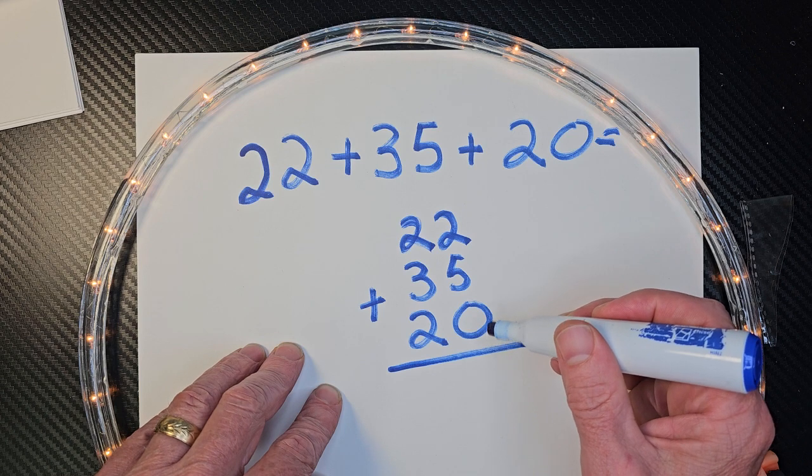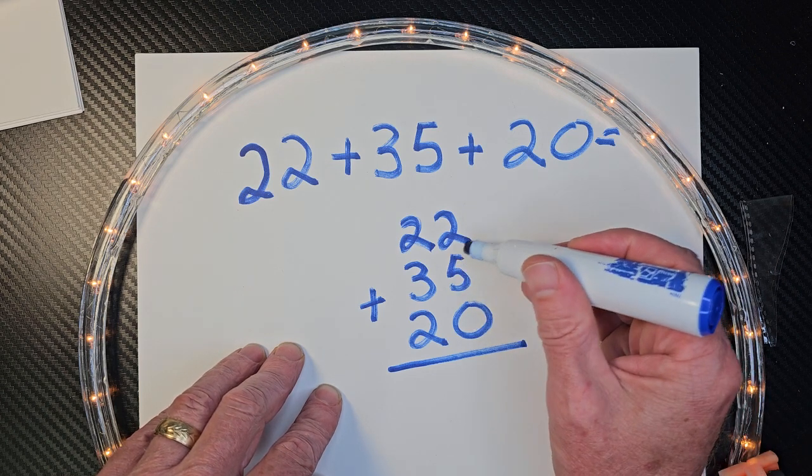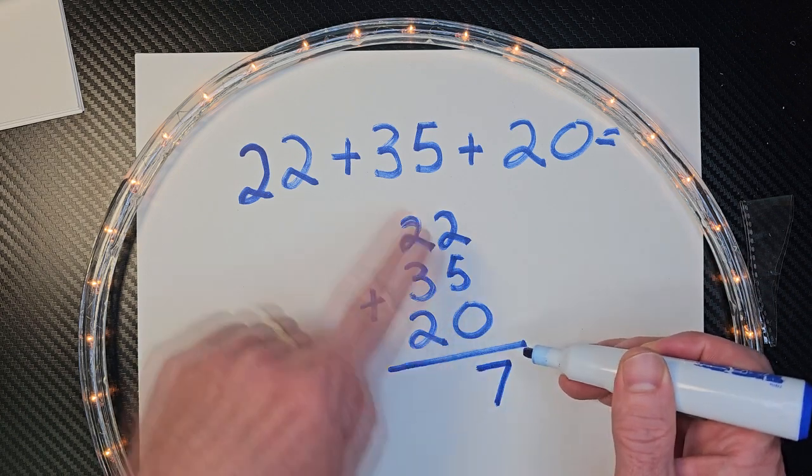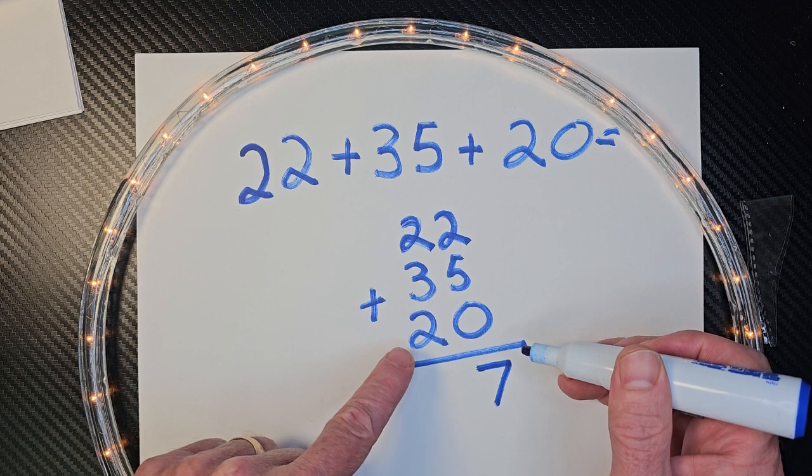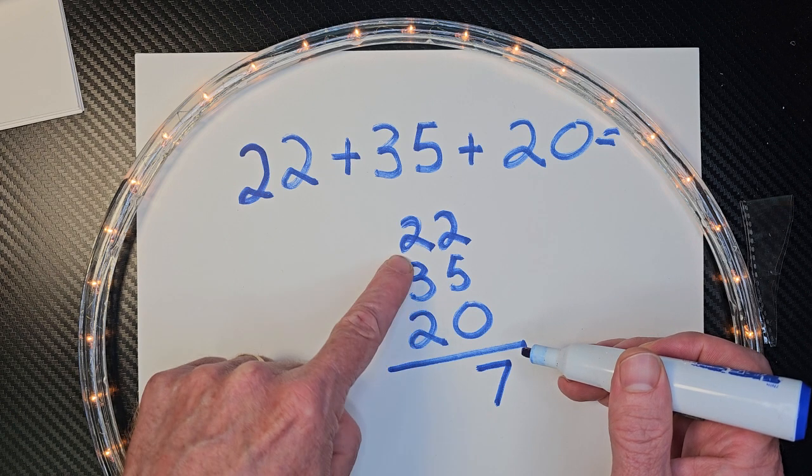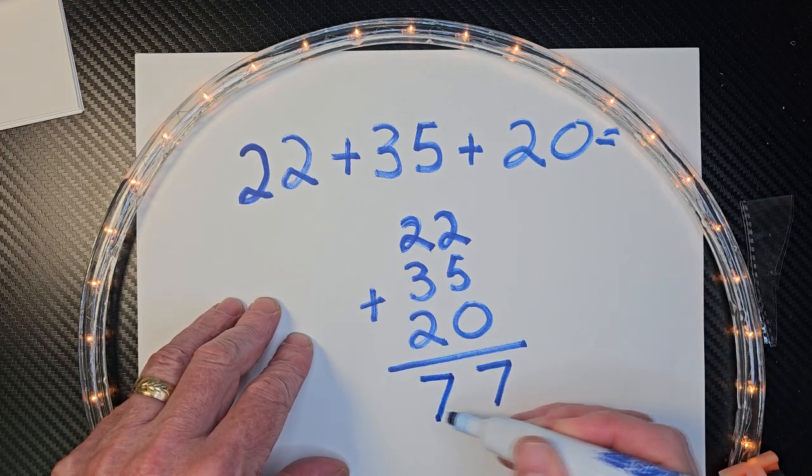And now I'm going to add the ones first. So I have zero plus five plus two. So five plus two is seven. I'm going to put seven right here. I don't need to carry anything. So I just go ahead and add the tens now. So two plus three is five. Five plus two, five, six, seven. So we have 77. Yay!